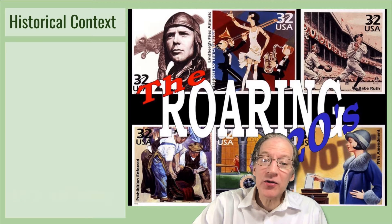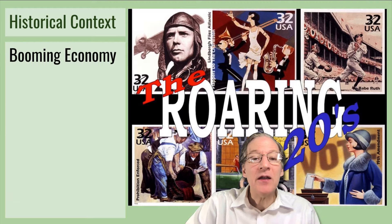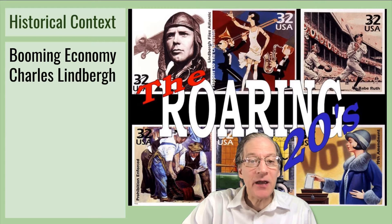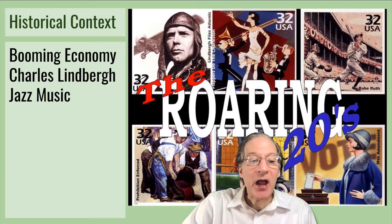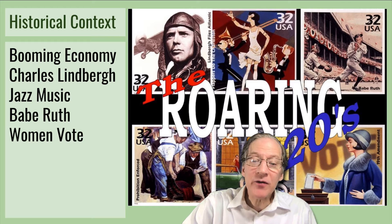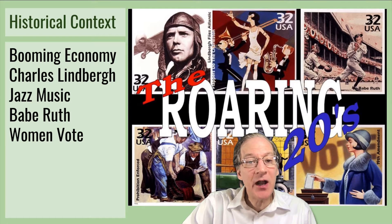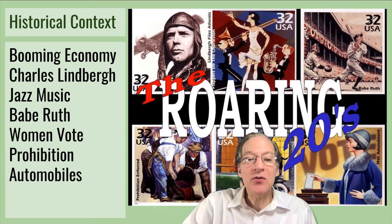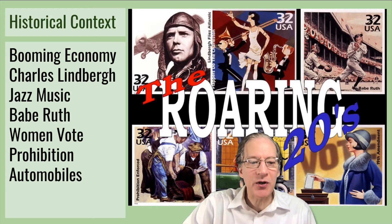In America during the Roaring Twenties, the economy was booming. Charles Lindbergh the aviator was a national celebrity, jazz music was everywhere, Babe Ruth was setting records in baseball, and women got the right to vote. Among the first things they did was vote to prohibit alcohol. And if you've read The Great Gatsby, you know all about the fancy cars, the American dream, and the class structure.